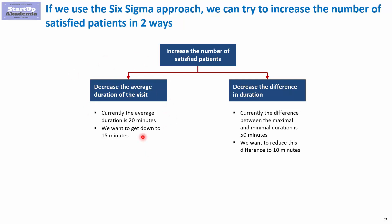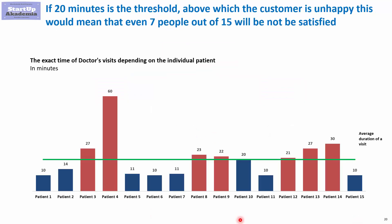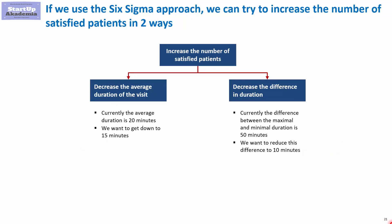The second route is to decrease the difference in duration — to improve consistency. The current difference between the maximum and minimum results is 50 minutes: the maximum is 60 and the minimum is 10. Six Sigma could aim to reduce this range from 50 minutes down to, say, 10 minutes. Both routes together help increase the number of happy customers served below 20 minutes.